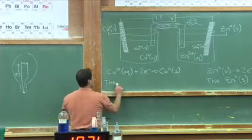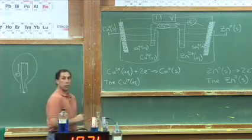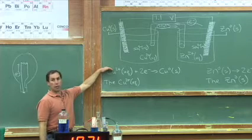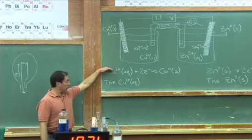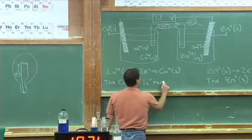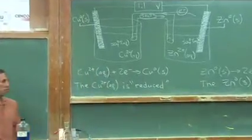So what we like to say is the copper 2 plus is reduced. The charge on copper 2 plus, and charge has another name, oxidation number, is going from 2 plus down to zero. So the copper 2 plus is said to be reduced.